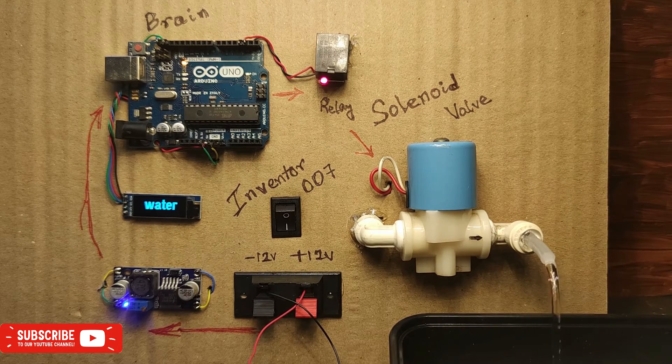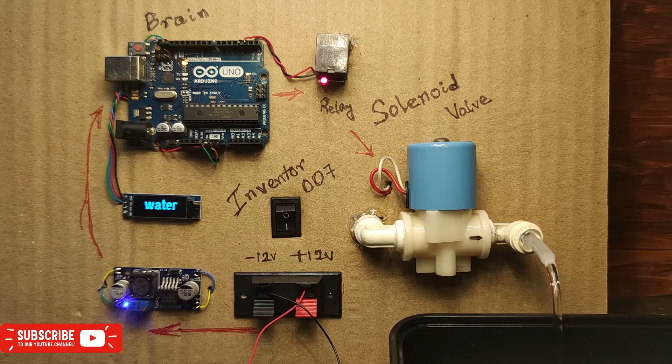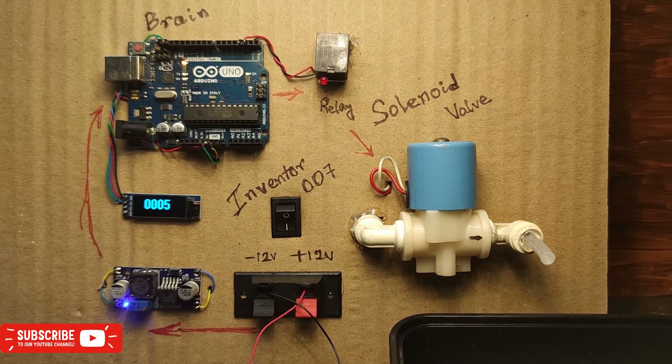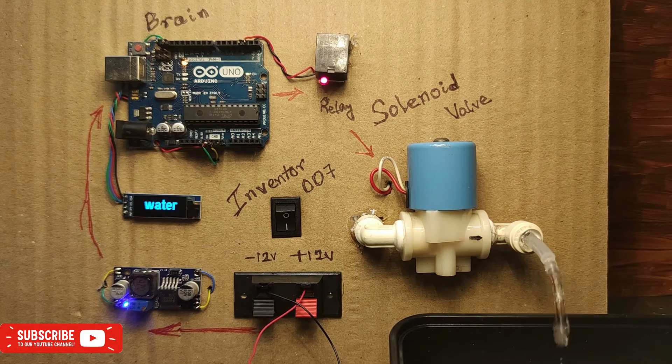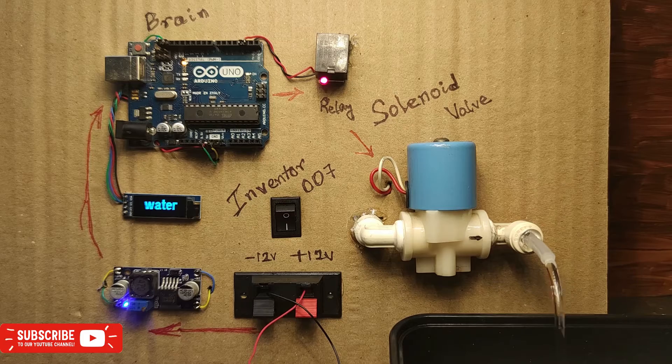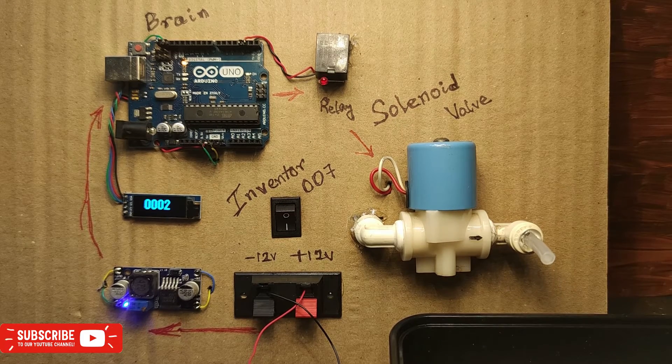See, again I have put a 3-second delay to put the valve on. That's why it is showing open for 3 seconds. That's why the water is flowing for 3 seconds. You can configure this time as per your requirement.